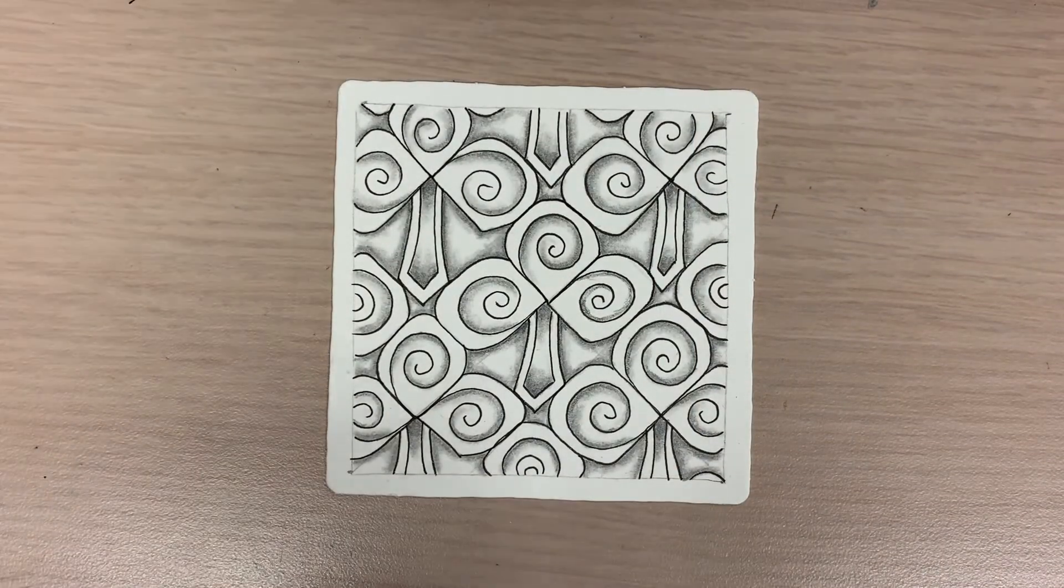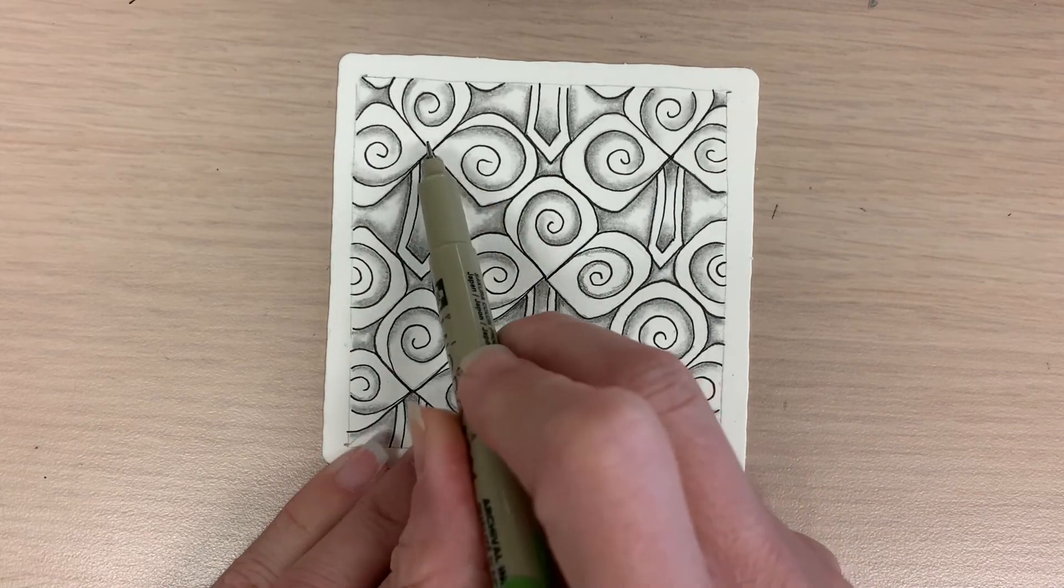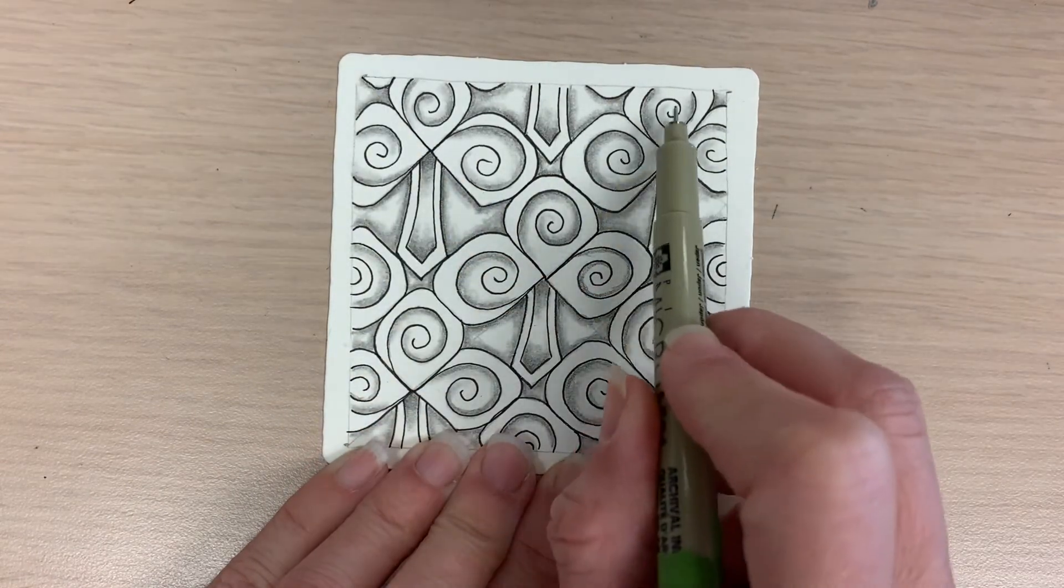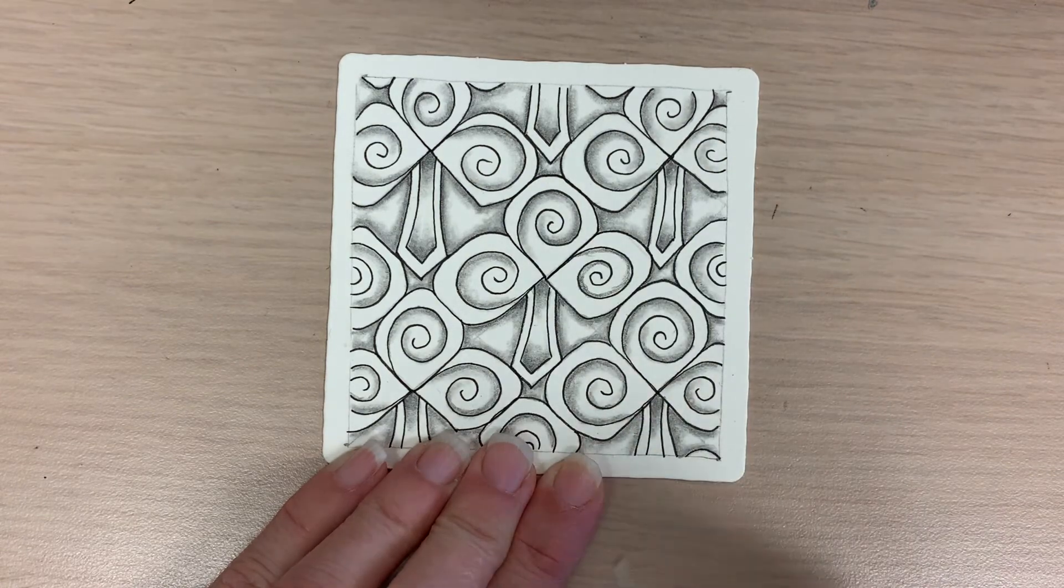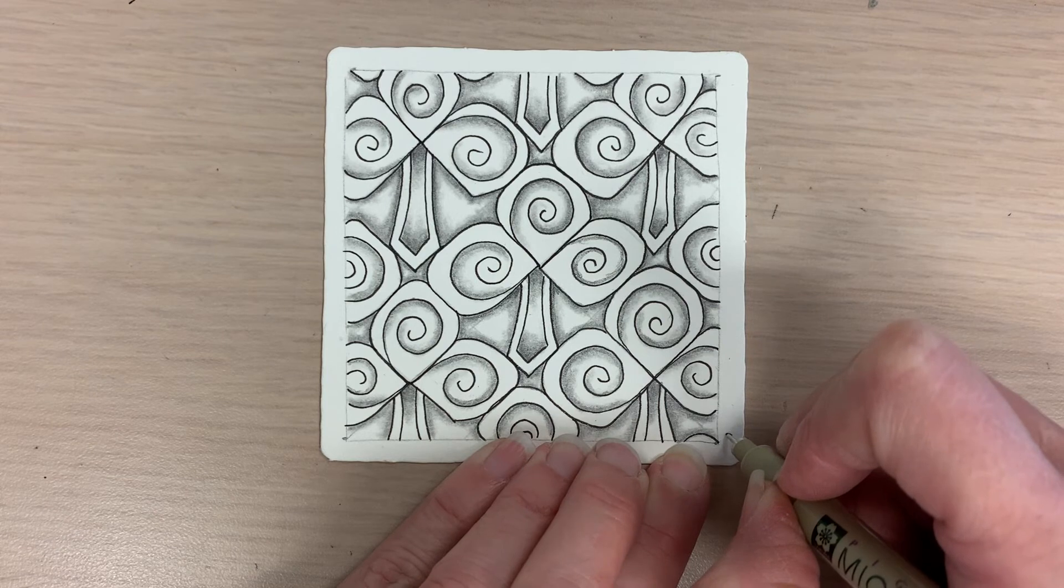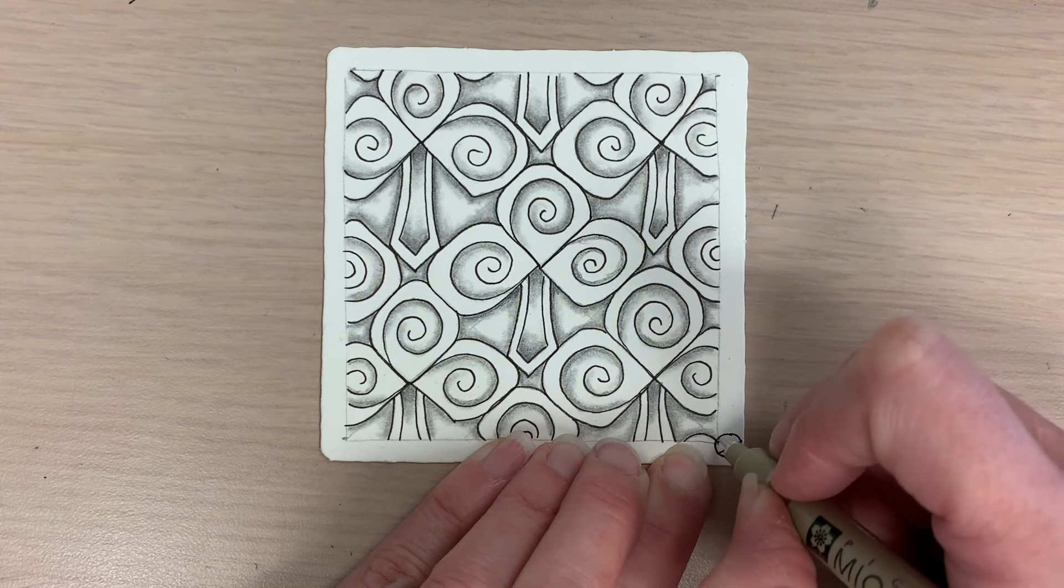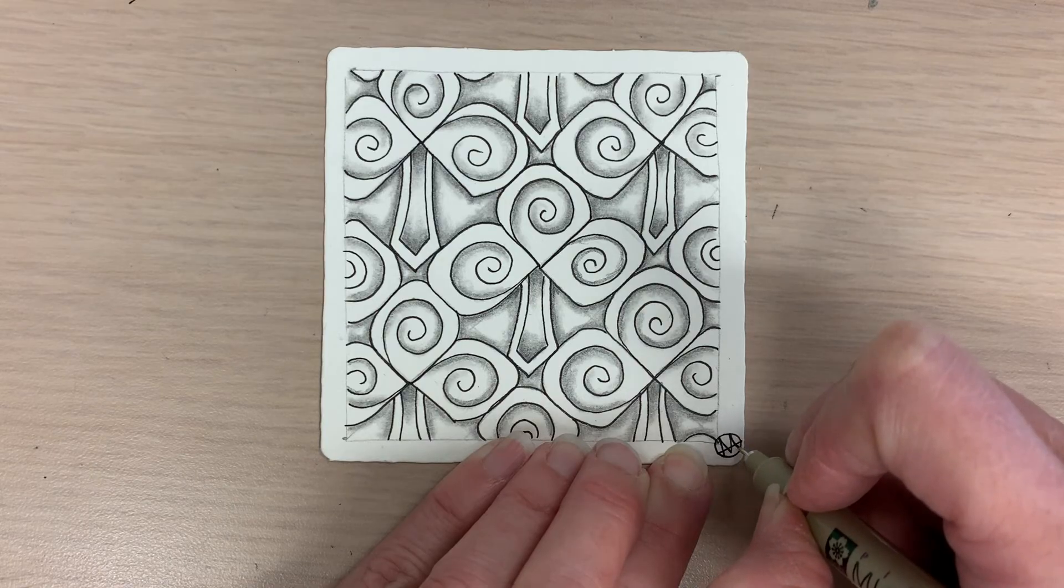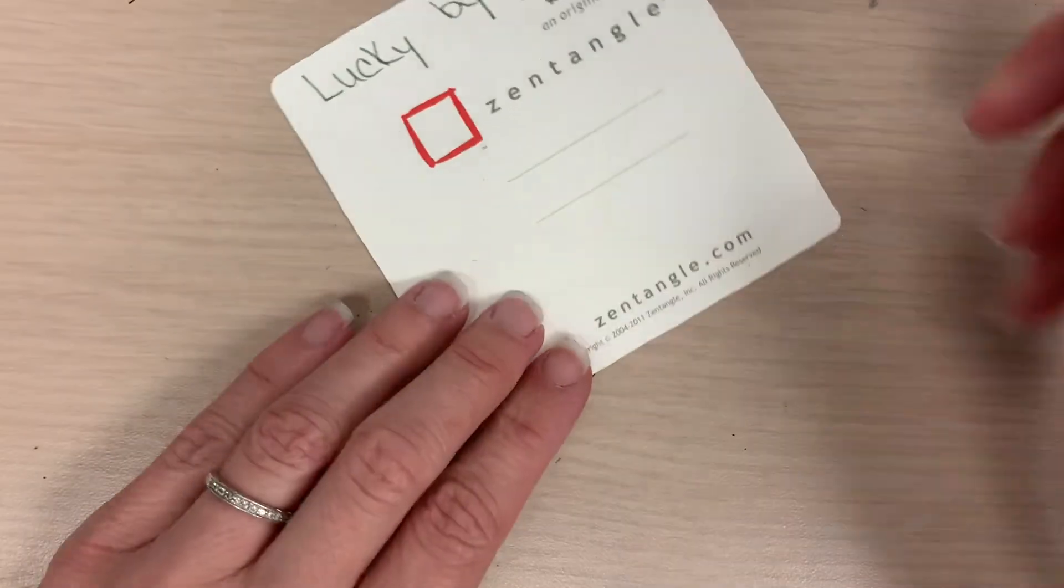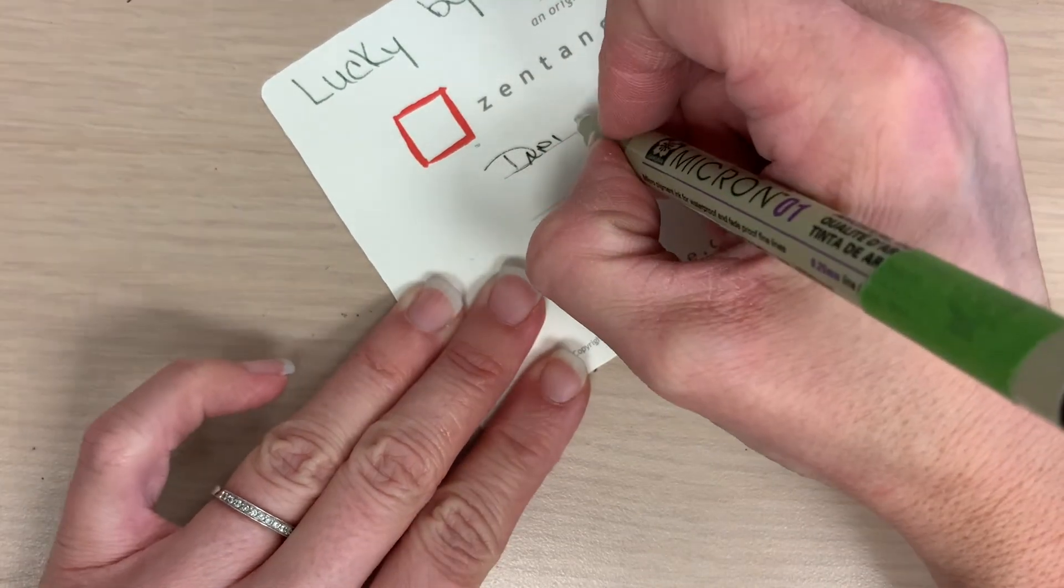So there you have it, all the shading's done. Might look neat to take a little gold jelly roll and put a little dot in the center or maybe at the ends of the spirals, so many different options you have here. I can't wait to see yours, please tag me in your posted tiles. I'm going to add my chop there, I'm going to sign the back and today is Saint Patrick's Day.